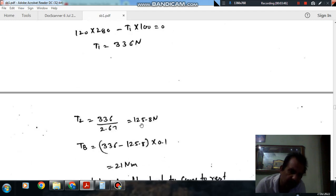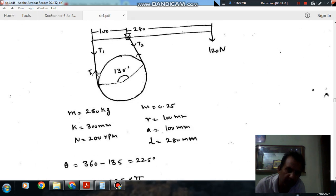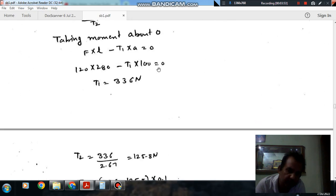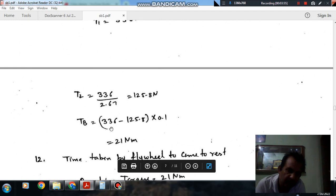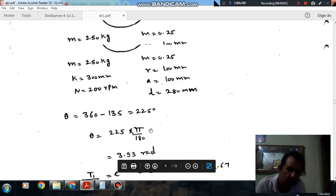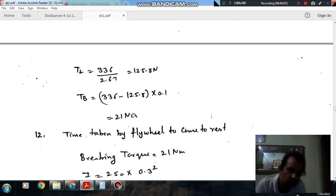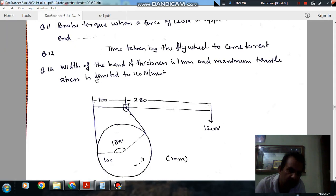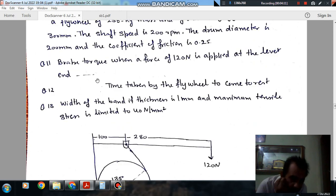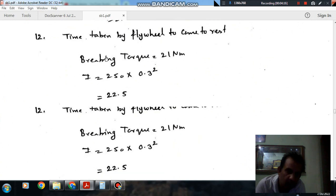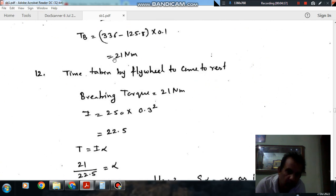So the braking torque will be T1 minus T2 into 0.1. That is 336 minus 125.8 into 0.1, which equals 21.0 Nm. So the answer to the first question, the braking torque is 21.0 Nm.